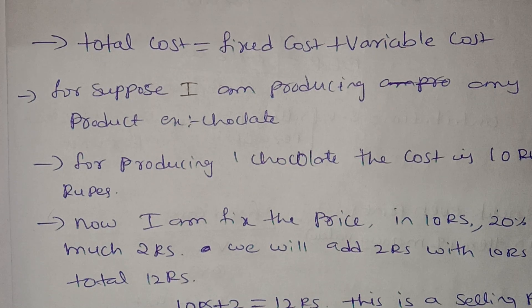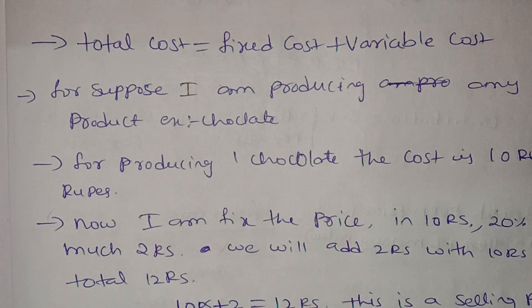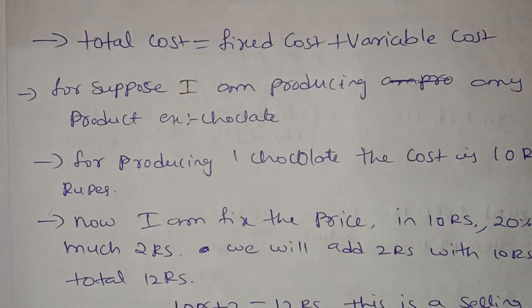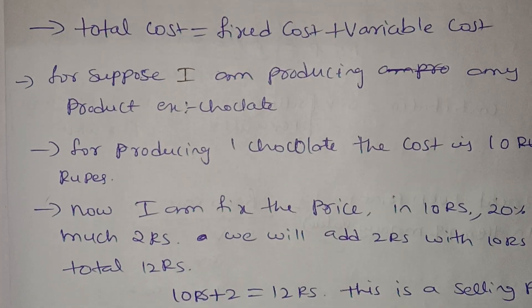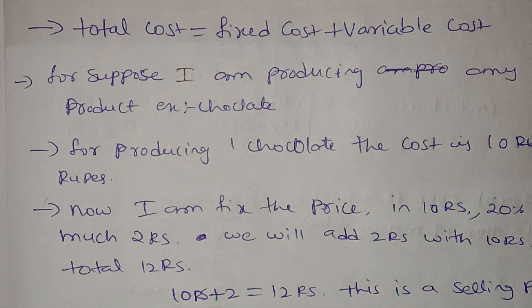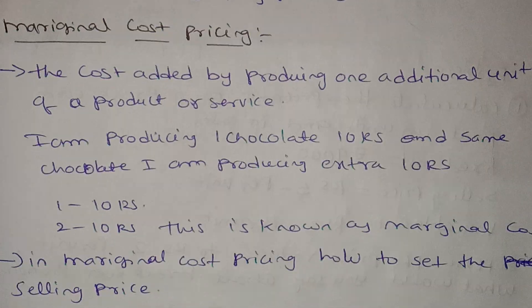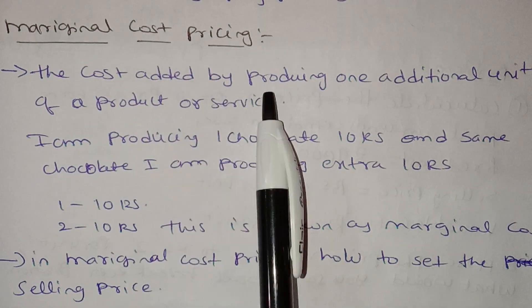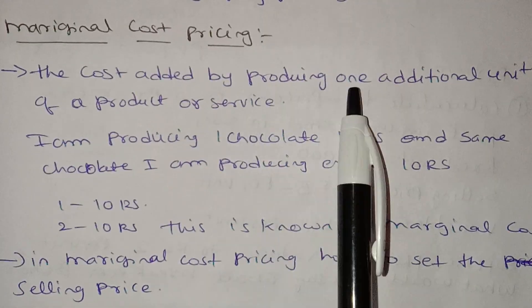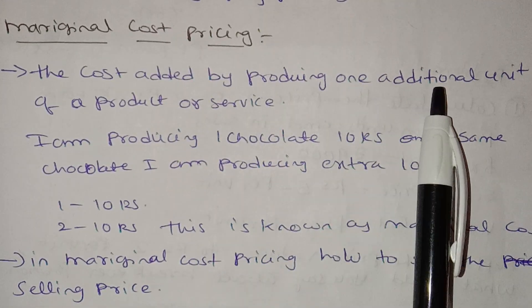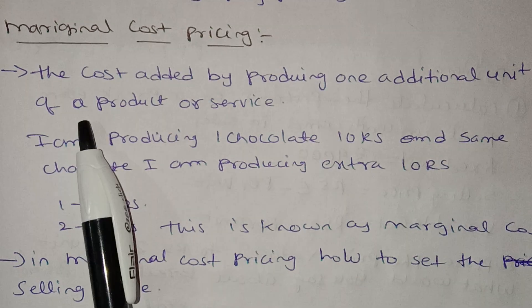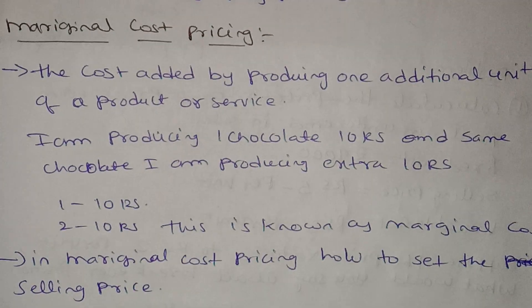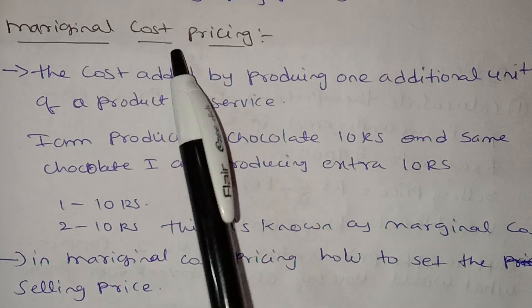Now we have marginal cost pricing. Marginal cost pricing is the cost added by producing one additional unit of a product or service.